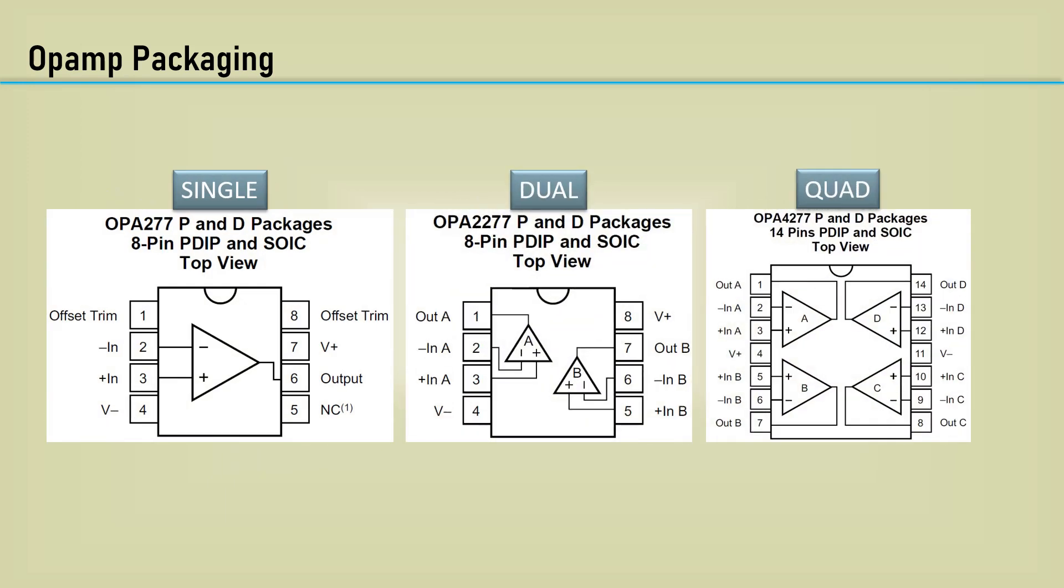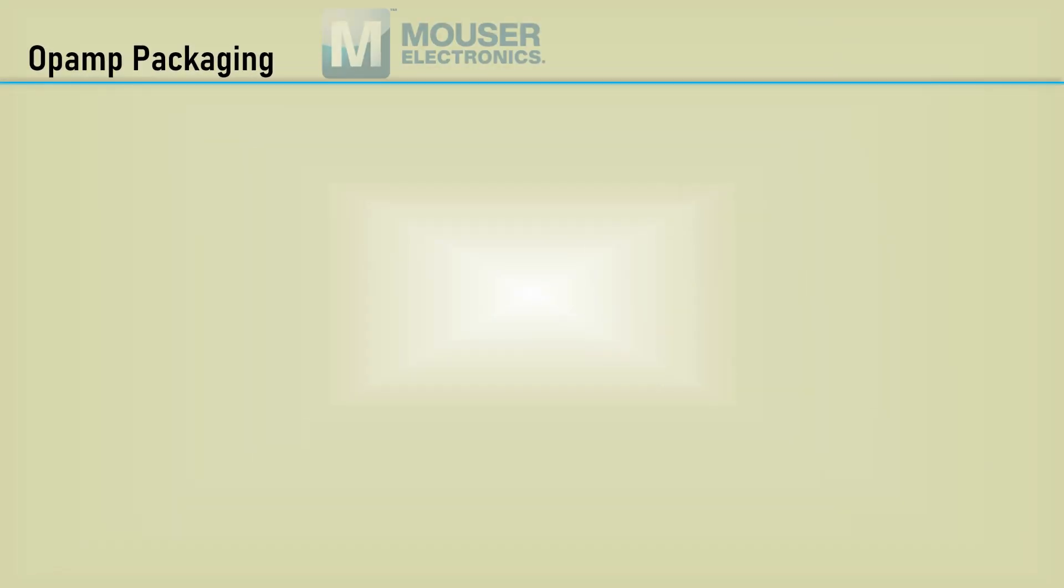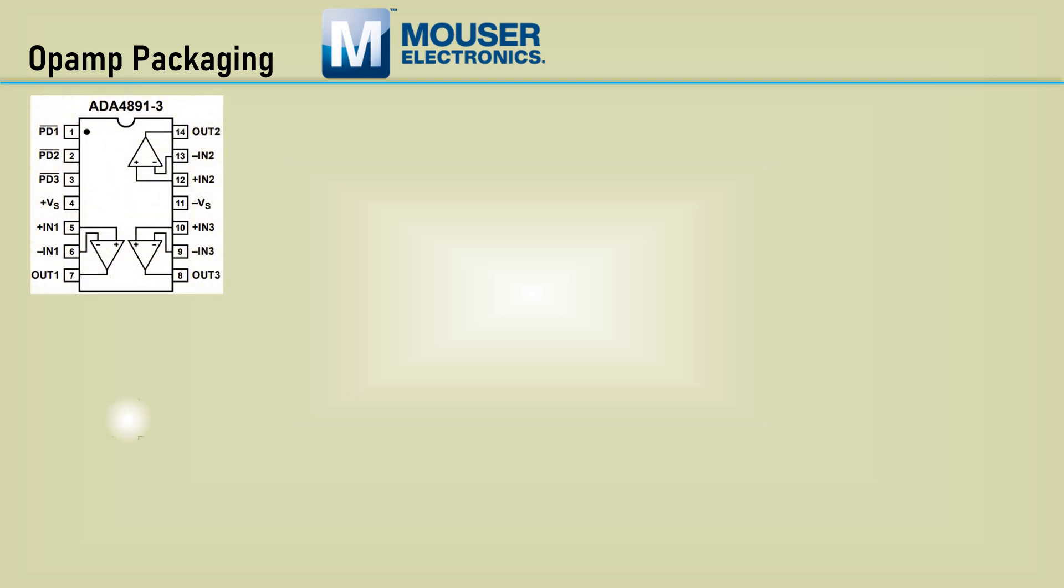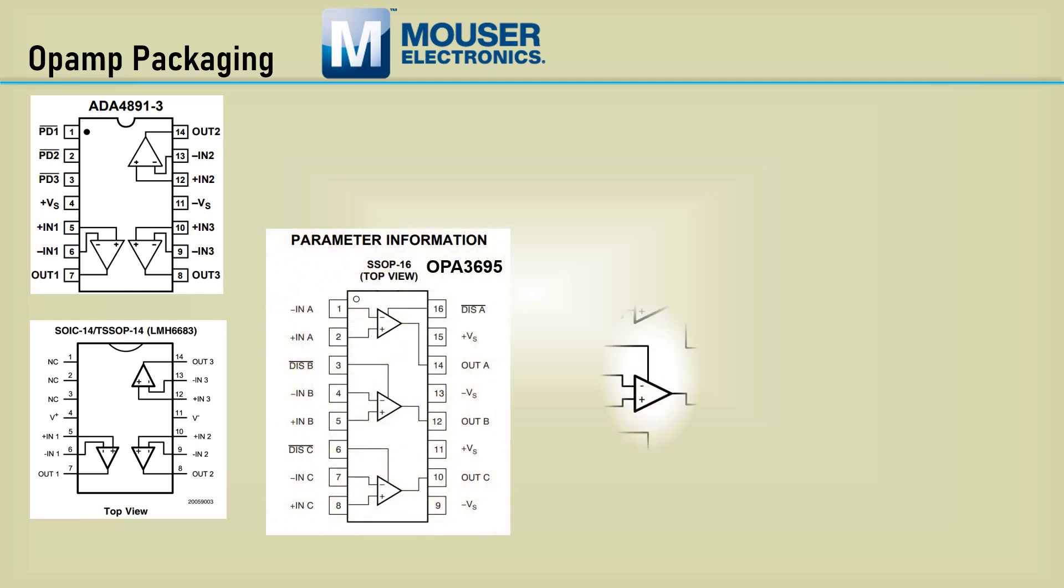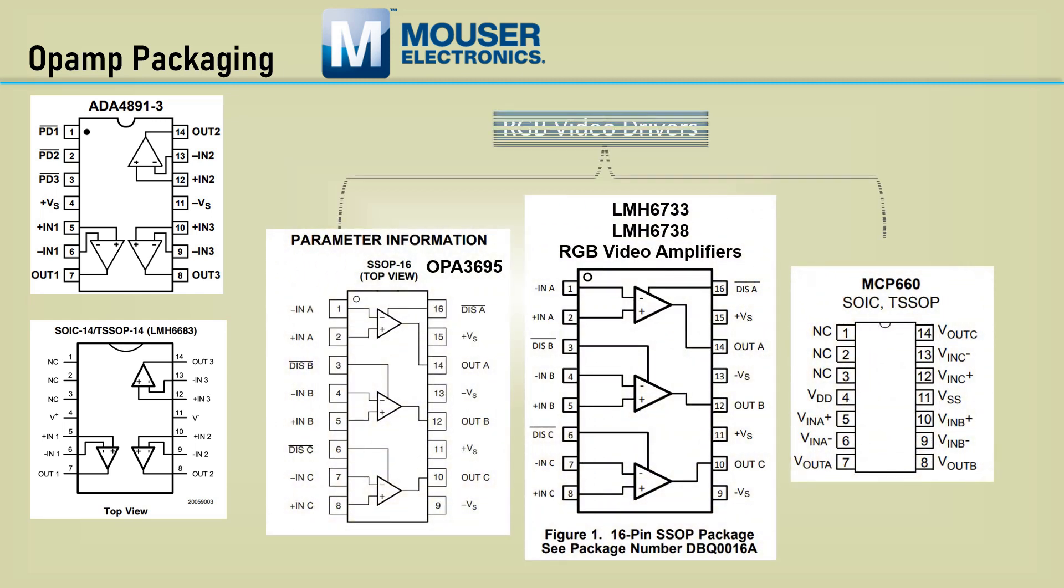Sometimes, three op-amps are required, and the fourth is just a vestige. This begs the question, why not use a triple? Turns out, triple op-amp packages are quite rare. I used the Mouser product selector and did a parameter search for three-channel op-amps. That filter resulted in only six part numbers. They were specifically designed for RGB video drivers, which makes sense.